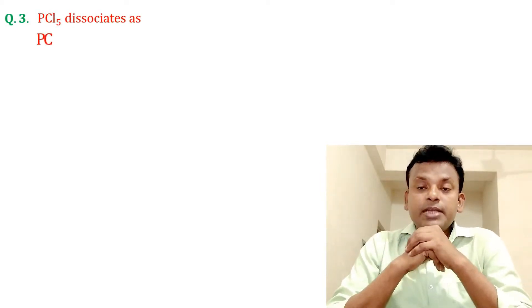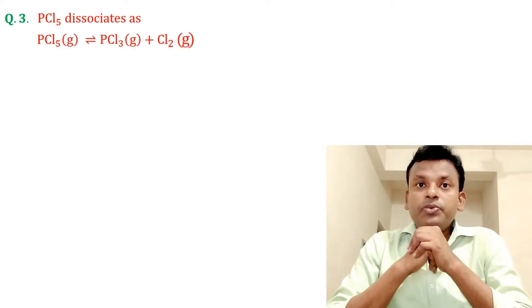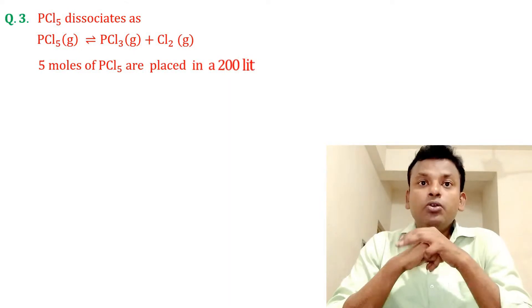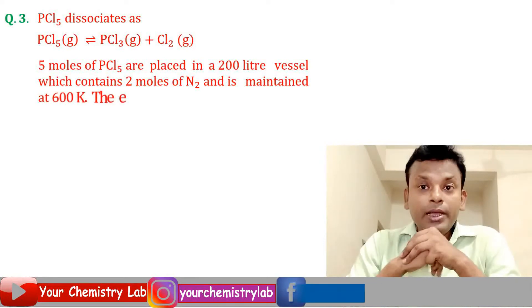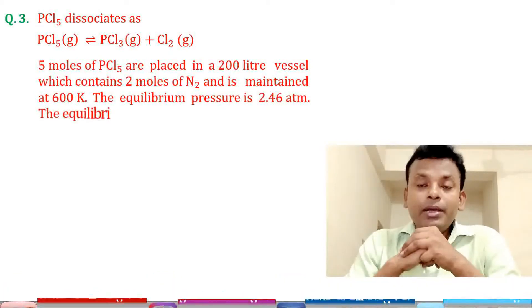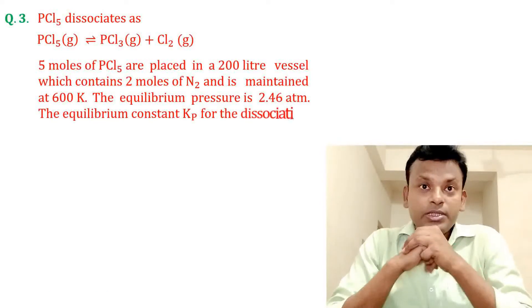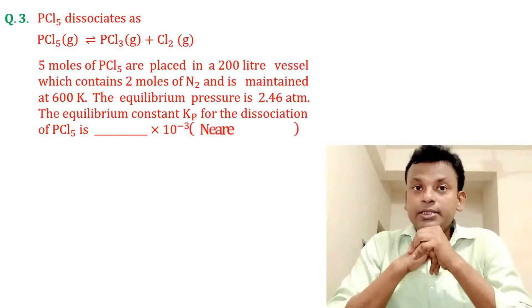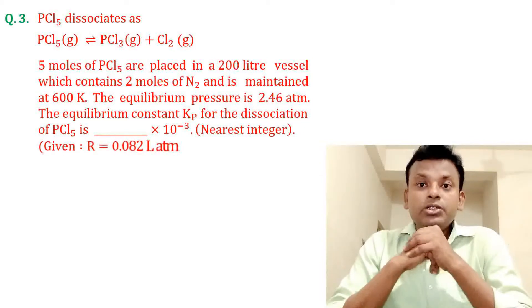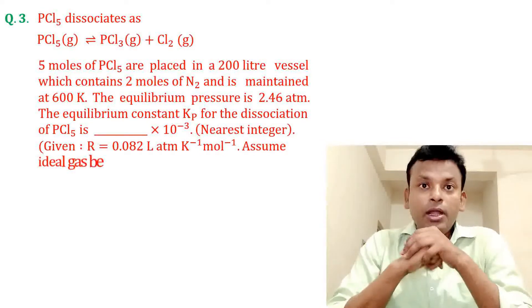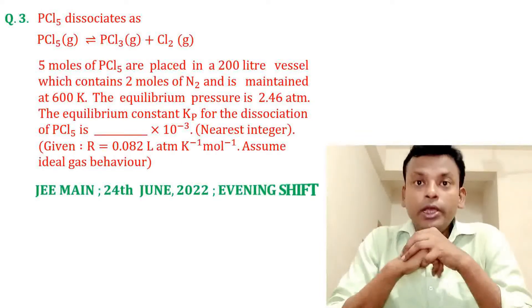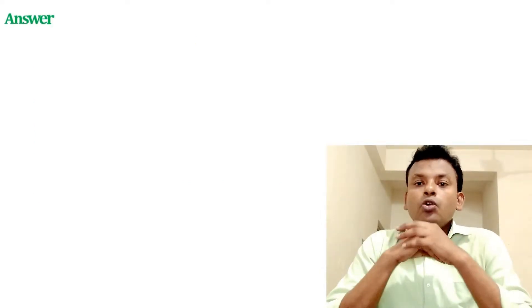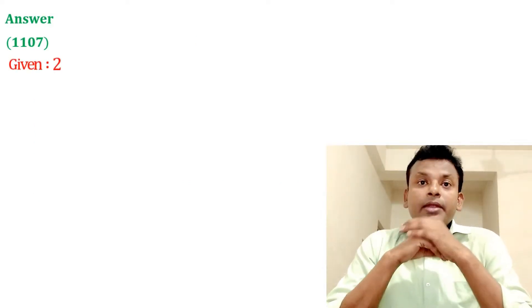Question three: PCl5 dissociates as PCl5 gives PCl3 plus Cl2. Five moles of PCl5 are placed in a 200-liter vessel containing 2 moles of N2, maintained at 600 Kelvin. The equilibrium pressure is 2.46 atm. The equilibrium constant Kp for the dissociation of PCl5 is blank times 10 to the power minus 3 (nearest integer). Given R = 0.082 L·atm/K/mol. This was set in JEE Main 24th June 2022 evening shift. Answer is 1107.